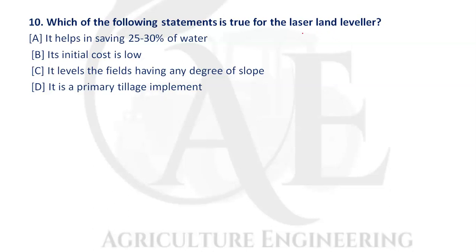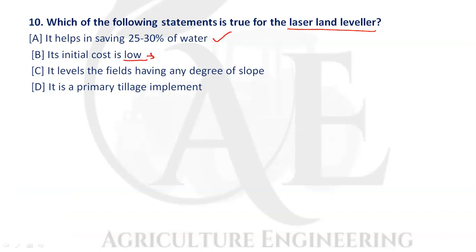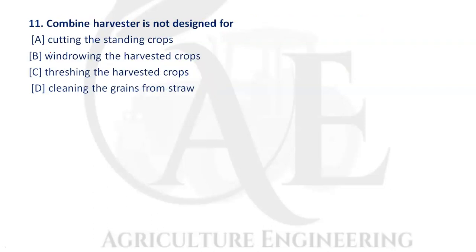Next question: which statement is true for the laser land leveler? It helps in saving 25 to 30 percent of water — this is a correct statement. Its initial cost is high compared to other types of levelers. It can measure slopes up to 0.02 percent only and is not a primary tillage equipment. Option A is the correct answer.